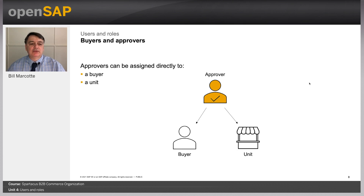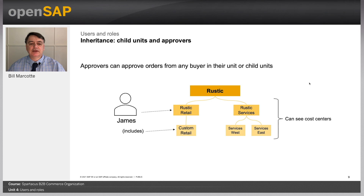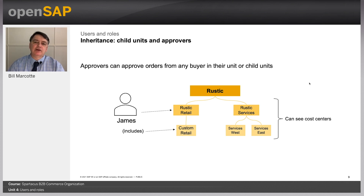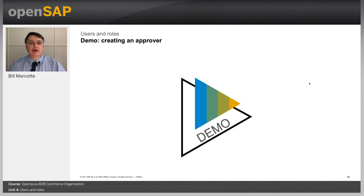For buyers and approvers: if someone makes a purchase in Custom Retail and there's an approver assigned to Custom Retail but they don't have sufficient permissions to approve the order, it goes up one level. It looks for other approvers assigned to the same unit, then up to approvers in higher units, continuing up the hierarchy looking for an appropriate approver. If no one is found, the administrator is chosen. That's the end of Unit 4 — I'll see you in the next unit.